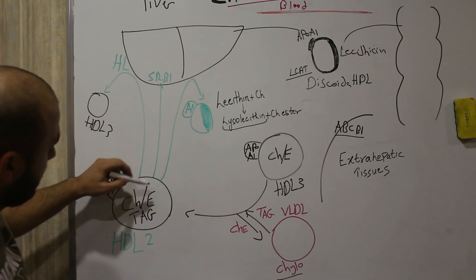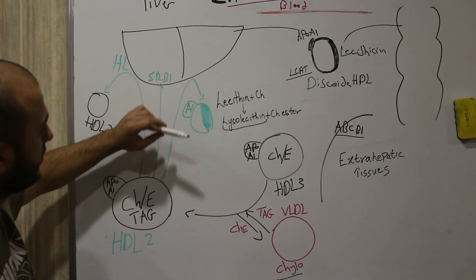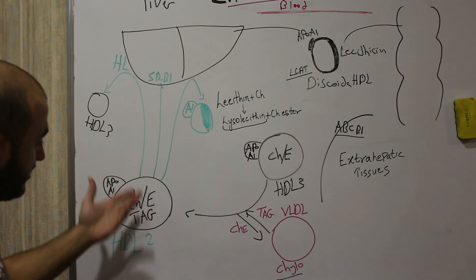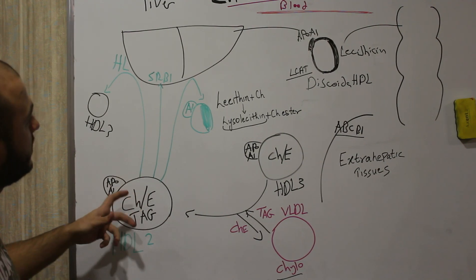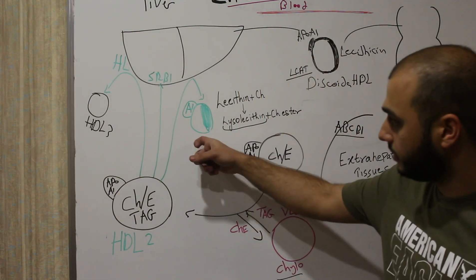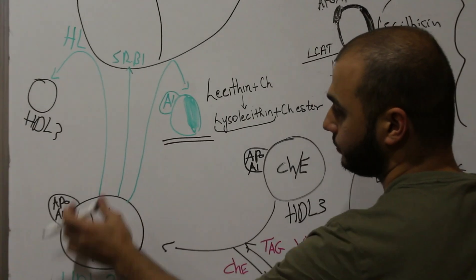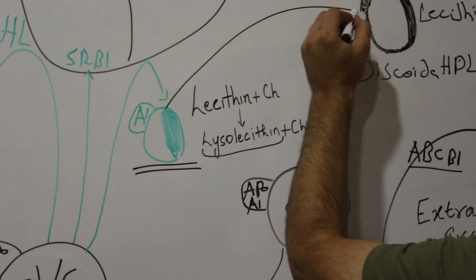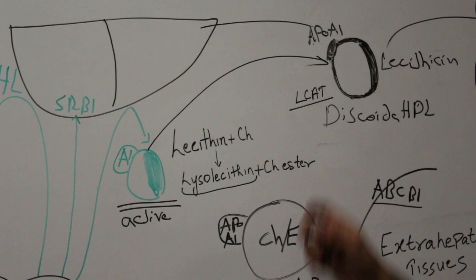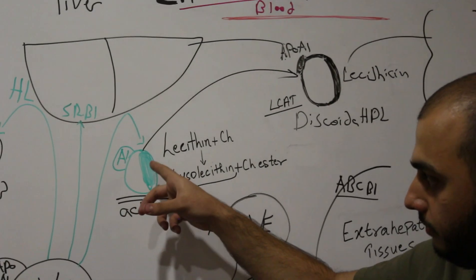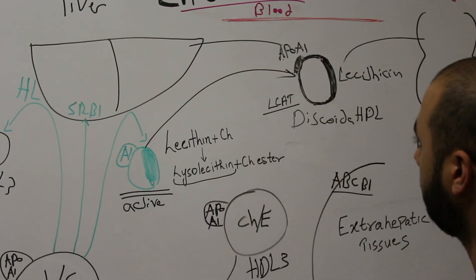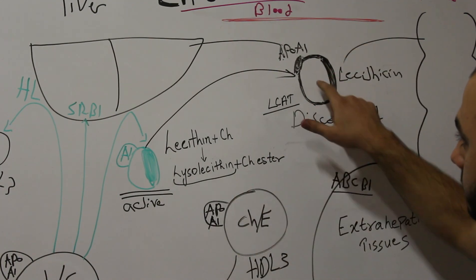The third fate is that HDL2 can be partially taken up by the liver — only the cholesterol and triacylglycerides are taken in, while the phospholipids and apoprotein A1 remain. This remaining form, rich in phospholipids only, is actually an active form of HDL because it can start accumulating more cholesterol and pass through the same cycle — acting just like the original discoidal molecule.